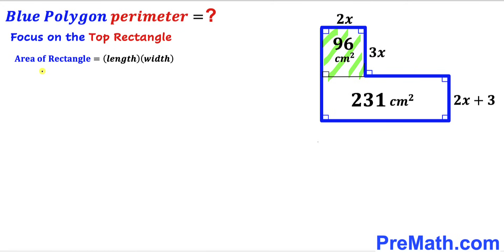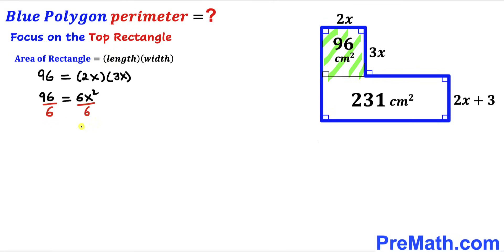Filling in the formula: 96 equals 2x times 3x. Simplifying, we get 96 equals 6x squared. Dividing both sides by 6 to isolate x squared, we get x squared equals 16. Taking the square root of both sides, our x value is positive 4 centimeters.